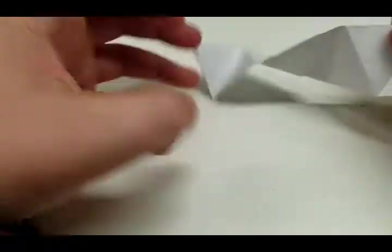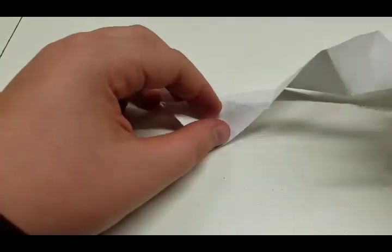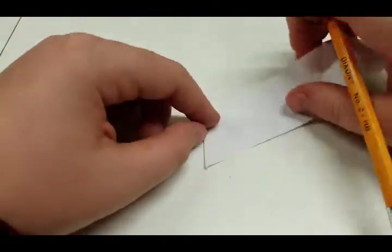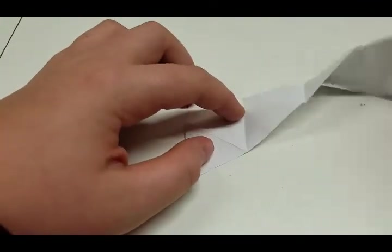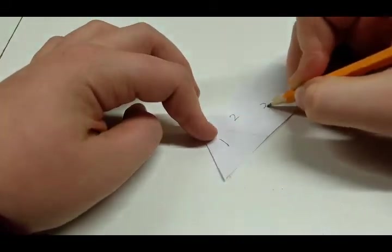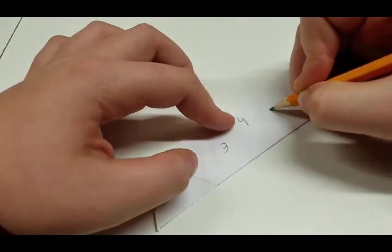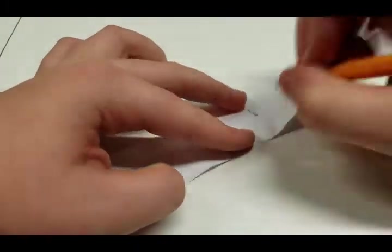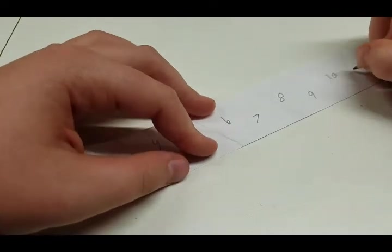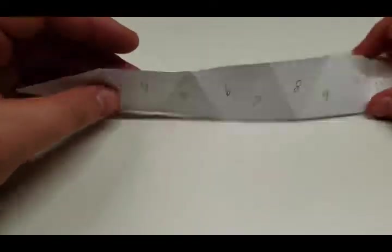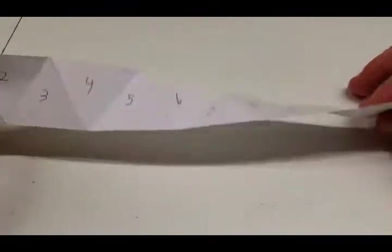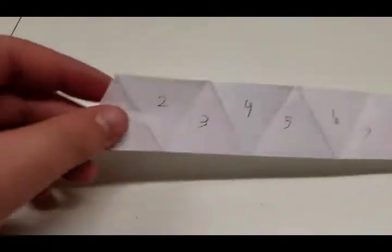And this is where you need your pencil. So on the first triangle, number them: one, two, three, four, five, six, seven, eight, nine, ten, and eleven. So it's possible to make it with ten, but to make it nicer and neater, you need eleven.